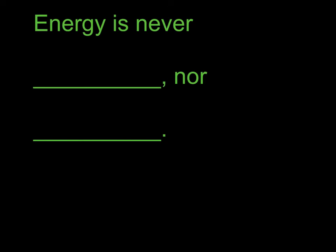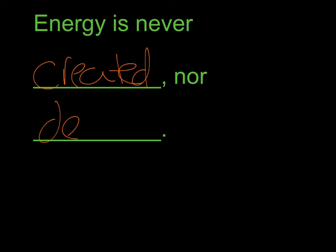And then once you think you know the answers, go ahead and continue playing the video. Alright, so this is what you should have here: energy is never created nor destroyed. So once you have energy, you can't just create new energy out of nowhere and it doesn't get destroyed and it's completely gone forever. Energy just transfers or transforms from one type of energy to another.